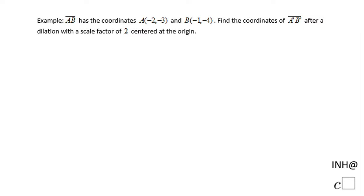Welcome to C squared. We're going to look at this example which asks us to find the coordinates of A'B' after a dilation with a scale factor of 2 centered at the origin. Point A is at (-2, -3) and point B is at (-1, -4).